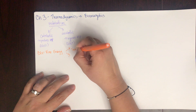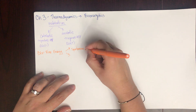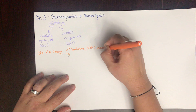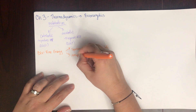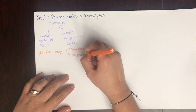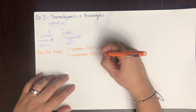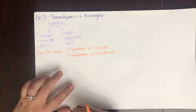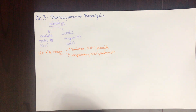A spontaneous reaction has a delta G less than zero — we call this a favorable reaction. A non-spontaneous reaction has a delta G greater than zero — we call this unfavorable. As mentioned in chapter 1, favorable and unfavorable reactions are often coupled together to achieve an unfavorable process.